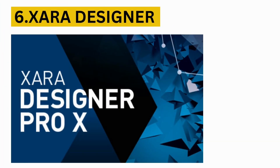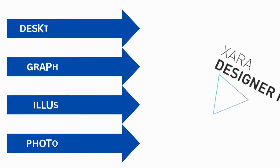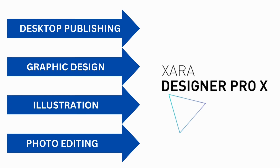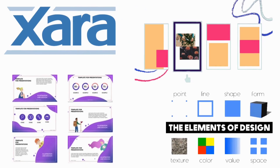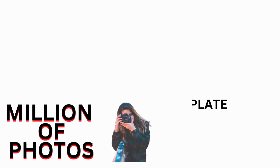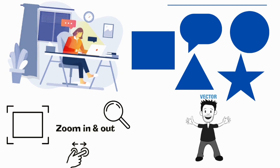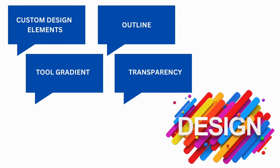Number 6: Zara Designer. Zara Designer has both bitmap and vector capabilities built in. This program can handle desktop publishing, graphic design, illustrations, and photo editing all in one place. It has hundreds of templates, layouts, and design elements, and comes with millions of archive photos to help you quickly start your work. Zara Designer has custom design elements and tools like gradients, outlines, and other design customizations, and you can easily access this software.